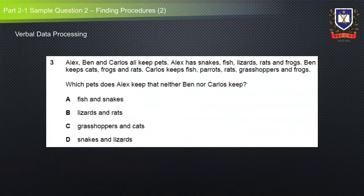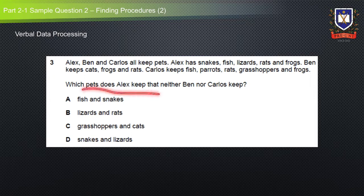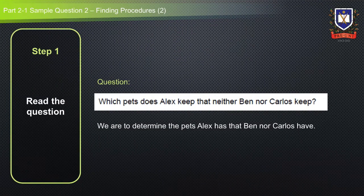Now let's look at a verbal data processing question from the Opportunity Class Sample Thinking Skills exam. Alex, Ben and Carlos all keep pets. Alex has snakes, fish, lizards, rats and frogs. Ben keeps cats, frogs and rats. Carlos keeps fish, parrots, rats, grasshoppers and frogs. Which pet does Alex keep that neither Ben nor Carlos keeps? This is a finding procedure question requiring students to find a procedure to process the information accurately. Step one: read the question — we need to determine the pets Alex has that neither Ben nor Carlos has. Step two: understand the problem — all three boys keep pets, and we can identify the pets each one has.